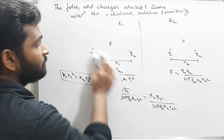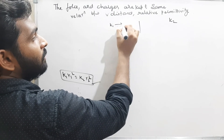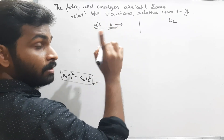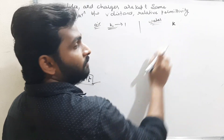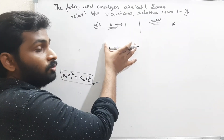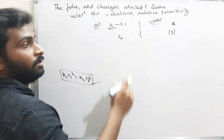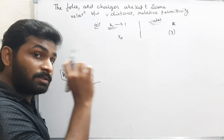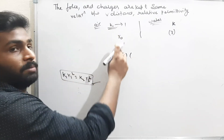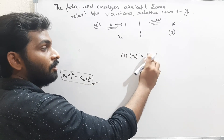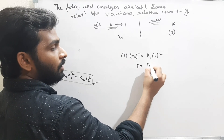Special case: if one medium is air (K1 = 1, distance R₀) and the other has dielectric constant K (distance R), then 1 × R₀² = K × R², giving R = R₀ / √K. That means the effective distance in a medium of dielectric constant K, to produce the same force as in air at distance R₀, is R₀ divided by √K.